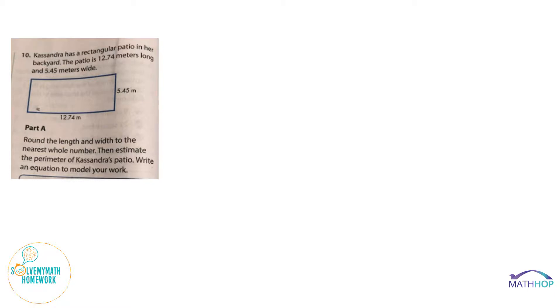Today's problem is a word problem that involves the perimeter of a rectangle. It says Cassandra has a rectangular patio in her backyard and that patio is 12.74 meters long and 5.45 meters wide. And then it provides a rectangle that has the length of 12.74 meters labeled and the width of 5.45 meters labeled.